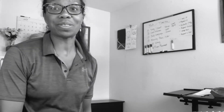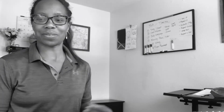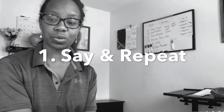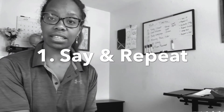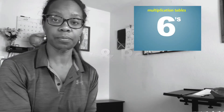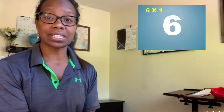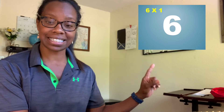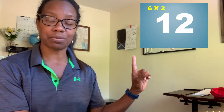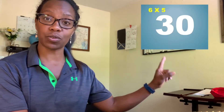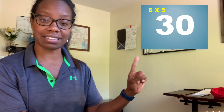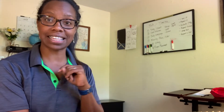Okay, so let's start with our sixes. We're just going to say it with each other, then we'll repeat it, then we will do our activity. So: six times one is six, six times two is 12, six times three is 18, six times four is 24, six times five is 30, and so on.